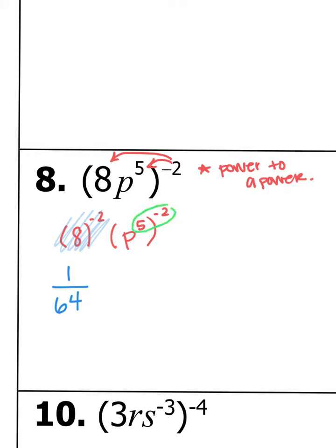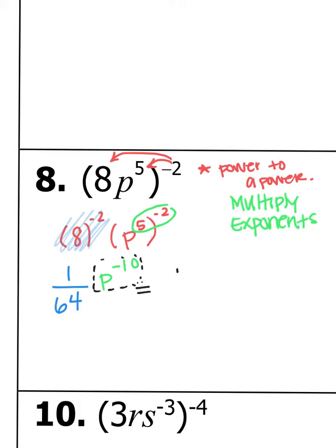When you have a power to a power, we multiply our exponents. For p to the fifth raised to the negative second: 5 times negative 2 makes p to the negative tenth. We performed the rule; now we just have to simplify by getting rid of our negative exponent. This is going to flip into the denominator and become positive. So 1 over 64 p to the tenth power is your answer.